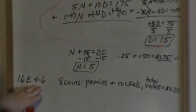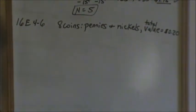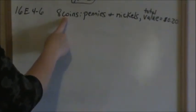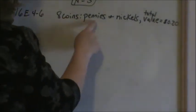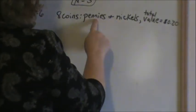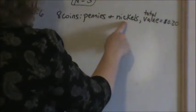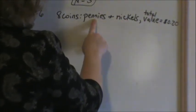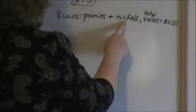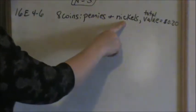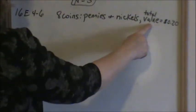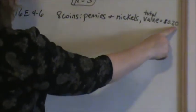Alright, let's look at 16E, 4 through 6. We are told we have 8 coins, and those 8 coins consist of pennies and nickels. We have two unknowns — we want to find out how many pennies and how many nickels we have. The problem also told us that the total value of the coins is 20 cents.